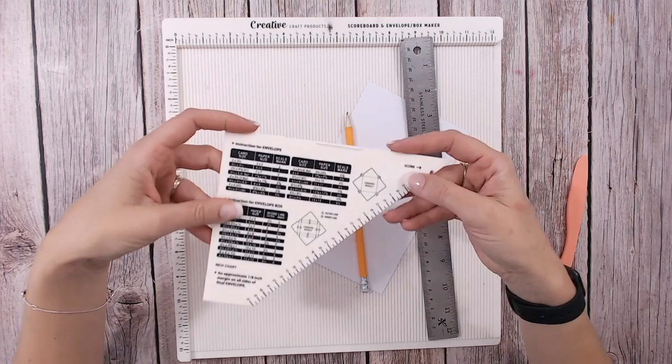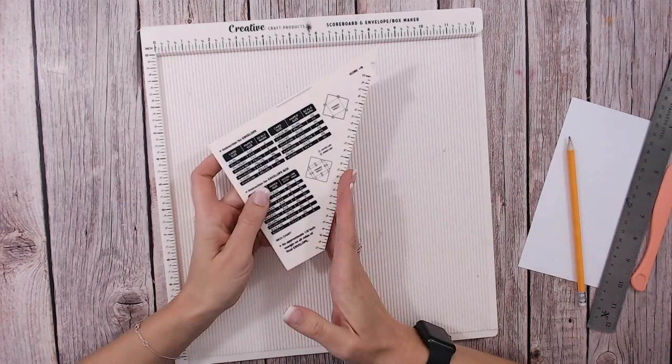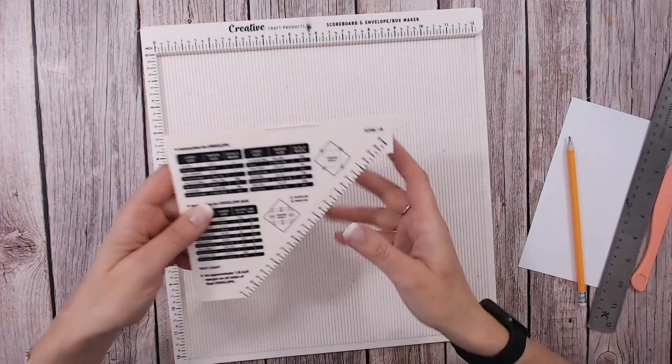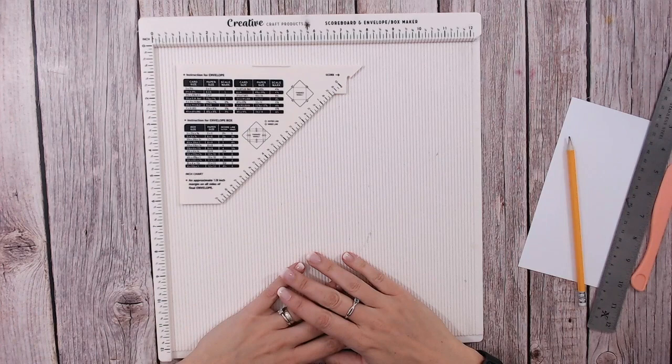So with this particular scoreboard, this panel sits behind here. Some of them have it, some of them don't. But what you do want is a scoreboard that does have this, otherwise you need to create yourself a 45 degree angle template to go on your scoreboard. So this one's perfect. I will link it down below. It's available at Craftstash so you can go and check that out.